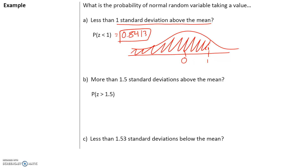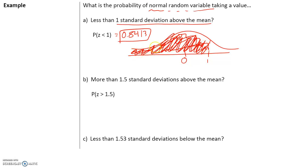Think about what this is saying. If the mean is 0, the shaded area gives us the probability that the value of a normal random variable is going to be less than 1 standard deviation above the mean, and that probability is 0.8413. The reason it's such a high probability is that most of the density curve is shaded.